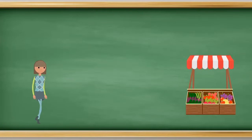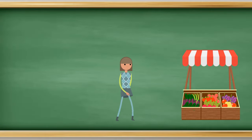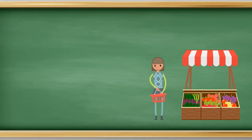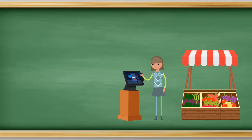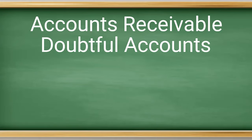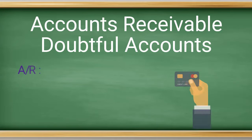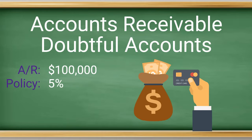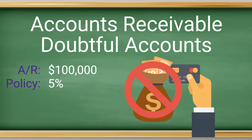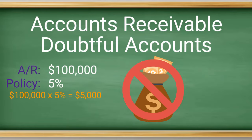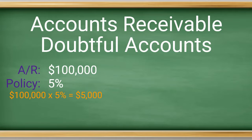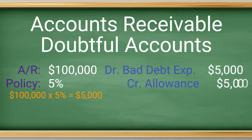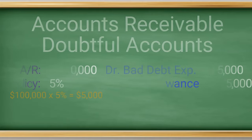We will make the remainder of the examples simpler where you don't need to solve for the answer. Our second adjusting entry example is doubtful accounts. You have an ending balance of accounts receivable of $100,000 and are told to apply a 5% reserve against that balance. Therefore, 5% of $100,000 is $5,000. So at month end, you book the following adjusting entries: a debit to doubtful accounts expense and a credit to allowance for doubtful accounts.